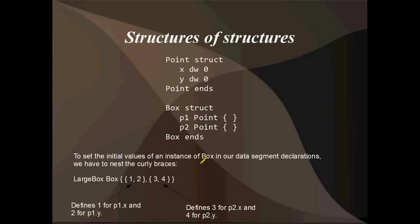To set the initial values of an instance of Box in our data segment declarations, you need to nest the curly braces. Because Box is a structure made up of smaller types, you've got to nest the curly braces. And this is how you do it just here. The first set of curly braces inside the larger set is going to set the default values for P1. So here we're overriding the two zeros for P1 and we're setting them to 1 and 2 for X and Y respectively. And the next set of nested curly braces, 3 and 4, well that's going to set the values for X and Y for P2 of our Box structure called LargeBox.